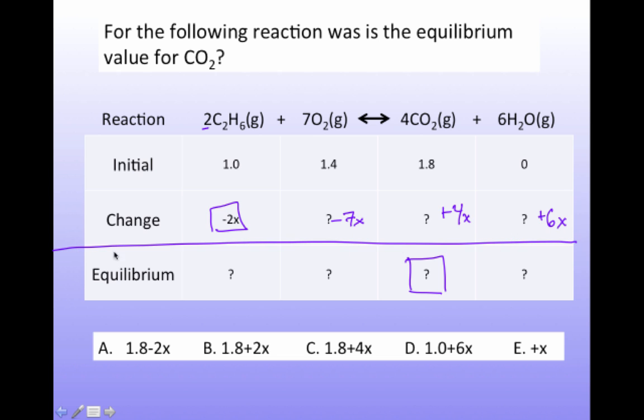So for every two moles of this that reacts, seven moles of this react minus 7x, and you form four moles of CO₂ and six moles of water. Then at equilibrium, what do you have? You have the sum of these. And so the answer is, is that at equilibrium, I get 1.8 plus 4x.